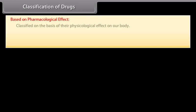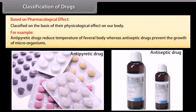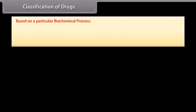Classification of drugs: drugs can be classified in several ways. Based on pharmacological effect, drugs are classified on the basis of their physiological effect on our body. For example, antipyretic drugs reduce the temperature of a feverish body, whereas antiseptic drugs prevent the growth of microorganisms. Based on a particular biochemical process, some drugs affect biochemical processes.